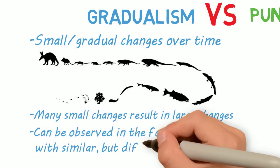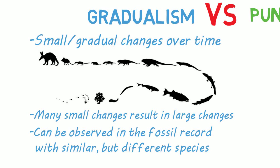This can be observed in the fossil record by looking at similar but different species, so they can compare and see these small changes.